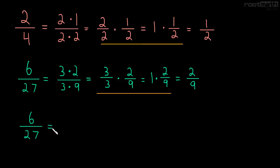So, 6 over 27 is 3 times 2 over 3 times 9. And we know that 3 is going to cancel to 1, so we'll just cross it out. And that's an abbreviation for those steps underlined in orange. And we end up with 2 9s.